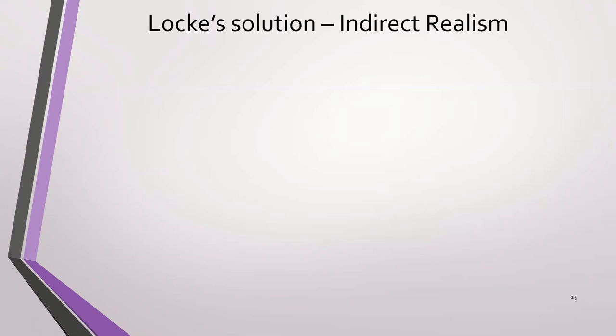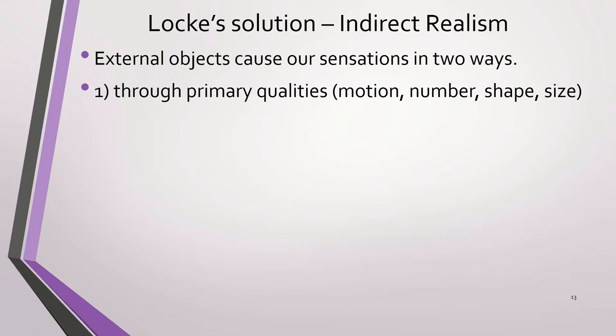So Locke does think we have the internal world and the external world, the internal world of the mind and the external world causing our sensations. So external objects cause our sensations, but they do so in two ways, according to Locke.